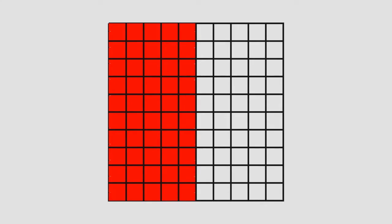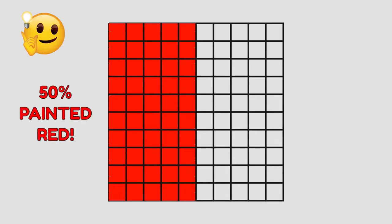What percentage of little squares have been painted red? Remember, we have 100 little squares and we have only painted 50. You are right — 50% of the little squares are painted red.